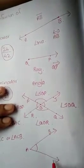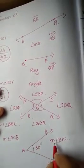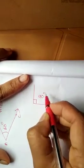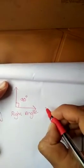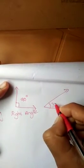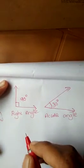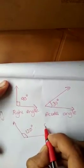The measure of angle BAC can be written as M(BAC). If it says 60 degrees, then the measure of angle BAC equals 60 degrees. You have already studied how to classify angles as acute, obtuse, or right angle. If the measure of an angle is 90 degrees, it is called a right angle. If the measure is less than 90 degrees, such as 30 degrees, it is called an acute angle. If the measure is more than 90 degrees and less than 180 degrees, such as 120 degrees, it is called an obtuse angle.